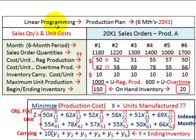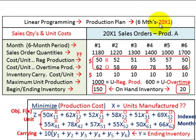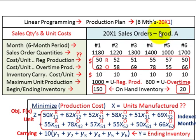What we're going to be going over here is a linear programming example where we're going to be setting up a production plan. We'll look at a six-month time period for year 20x1. We're going to be looking at one product here, product D, that we're going to be setting up this production plan on.